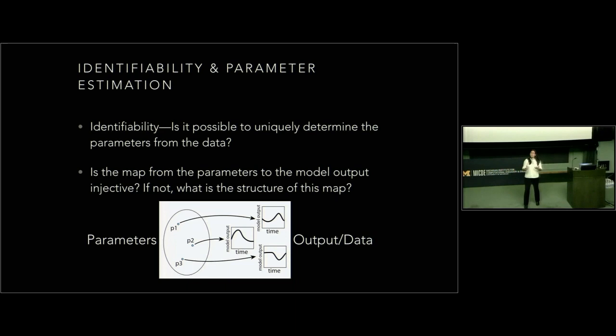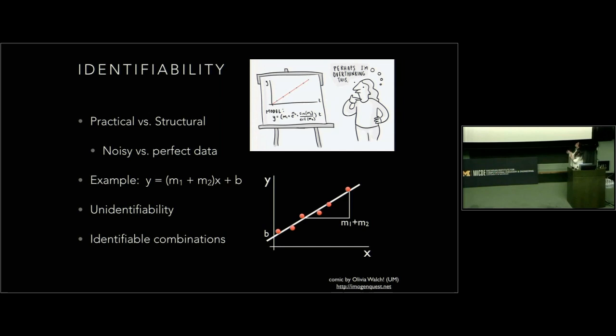This question has important implications because often the parameters of our models have meaning for the physical world — in my case, thinking about infectious disease transmission. So we want to understand the structure of our parameters and what we can recover from a given dataset and model.